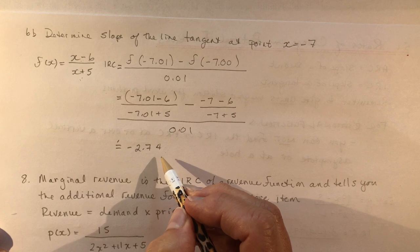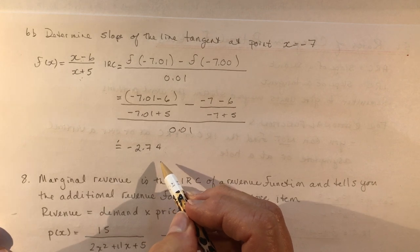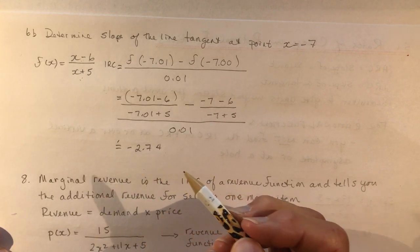So again, this is a slope, so I don't need units. It's rise over run, right? The slope is about minus 2.74.